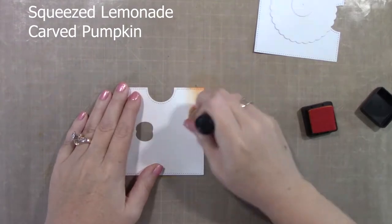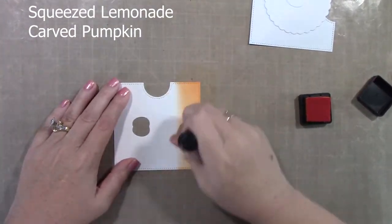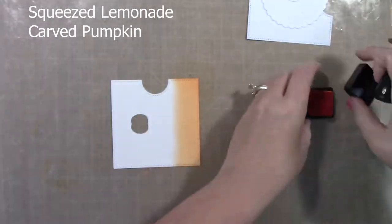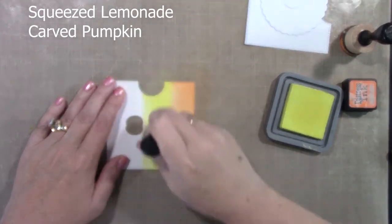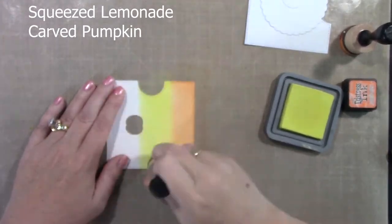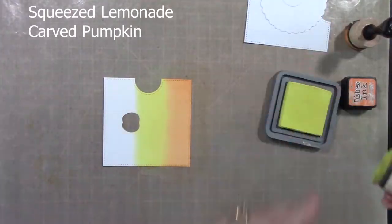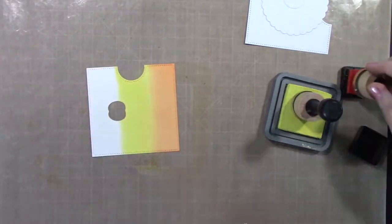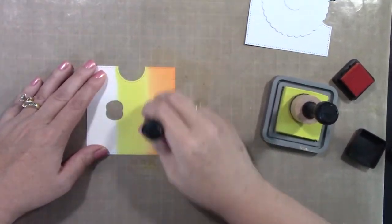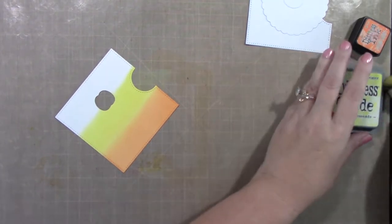So I'm just going to put those pieces aside. Now my inspiration for this is a Candy Corn, which I saw on a cute bag at the store. And so I'm using Carved Pumpkin and Squeezed Lemonade Distress Inks, and just blending those. And really you don't have to have a super great blend, because you kind of want that line. Super cute. I loved how that turned out.